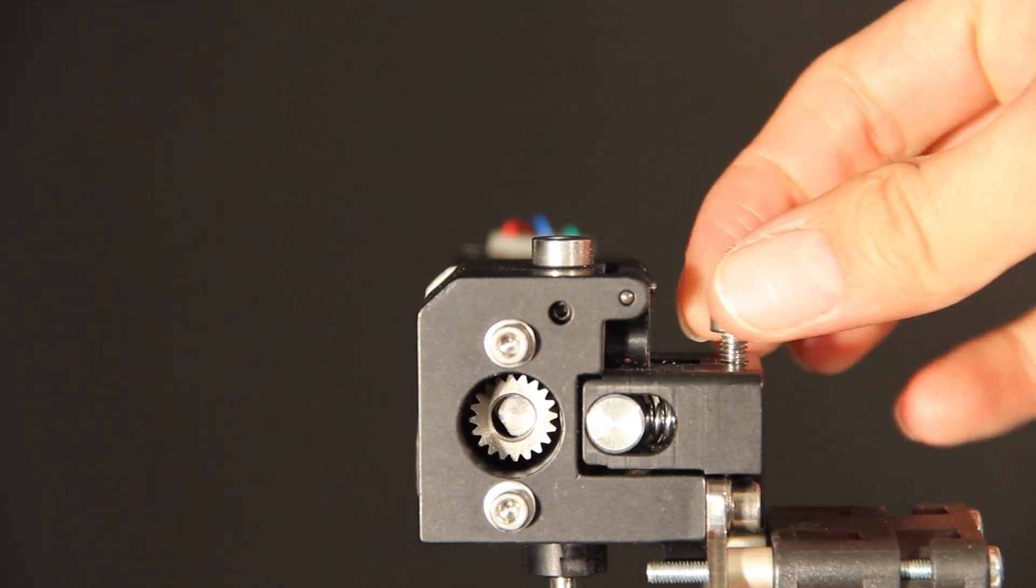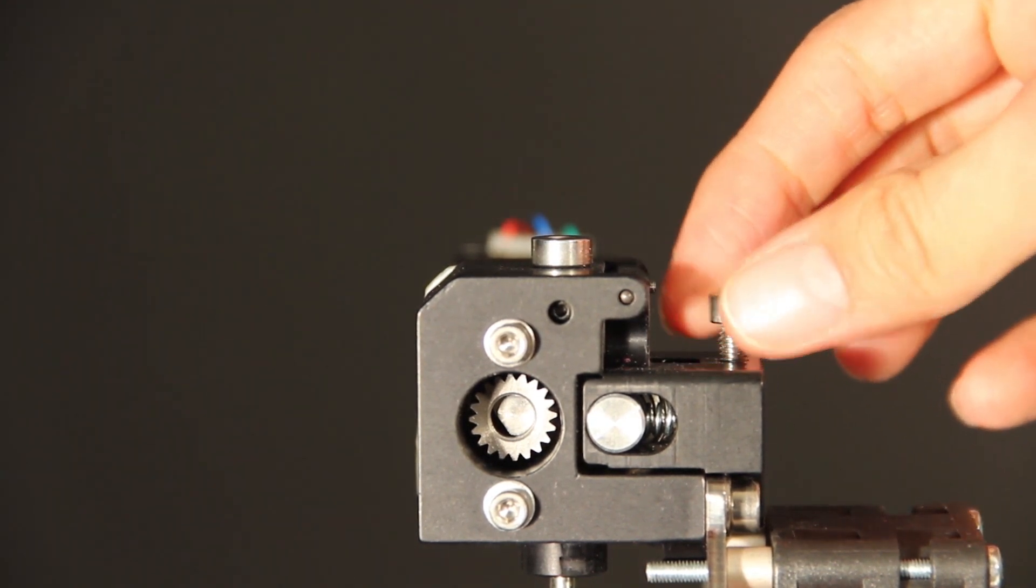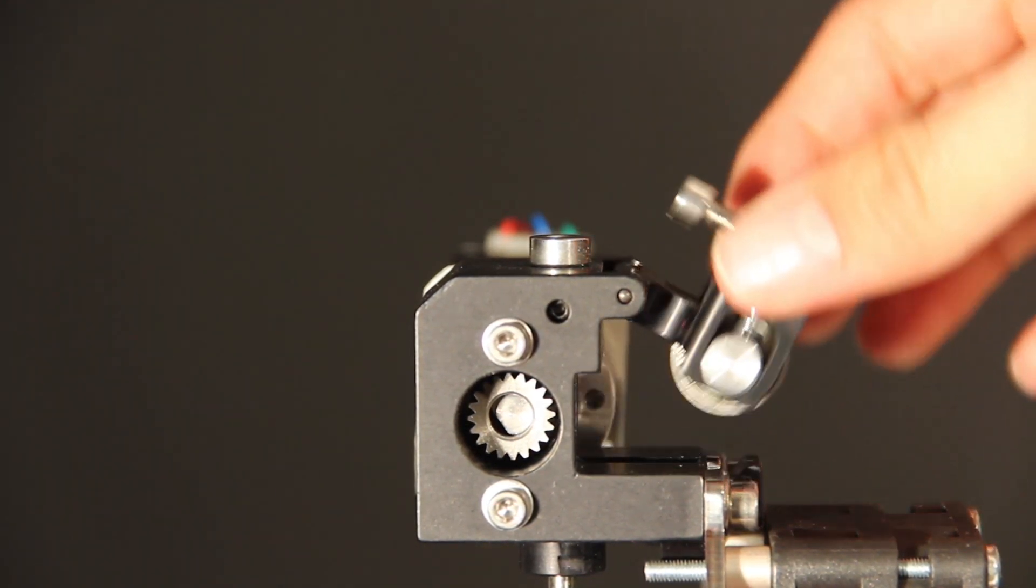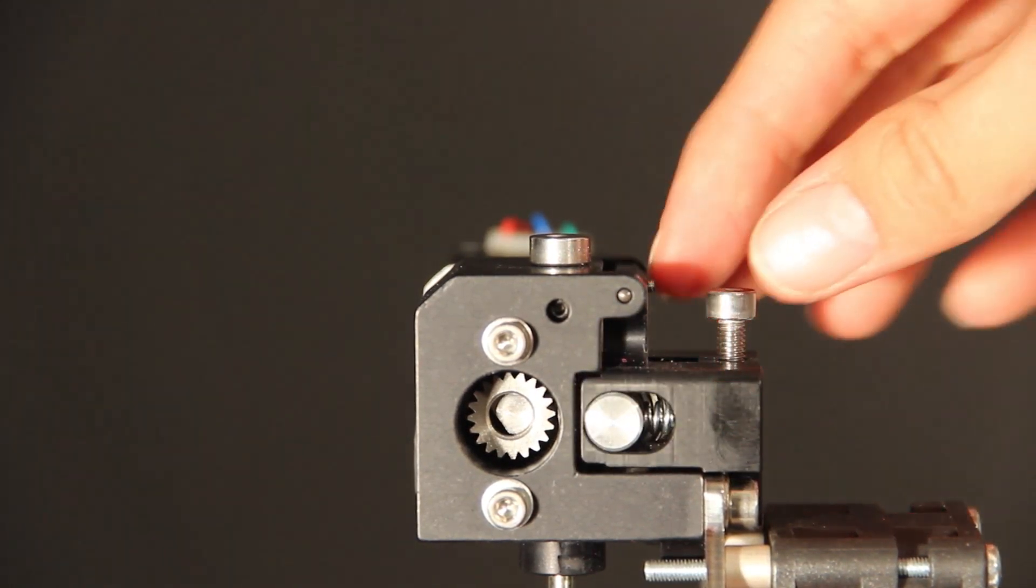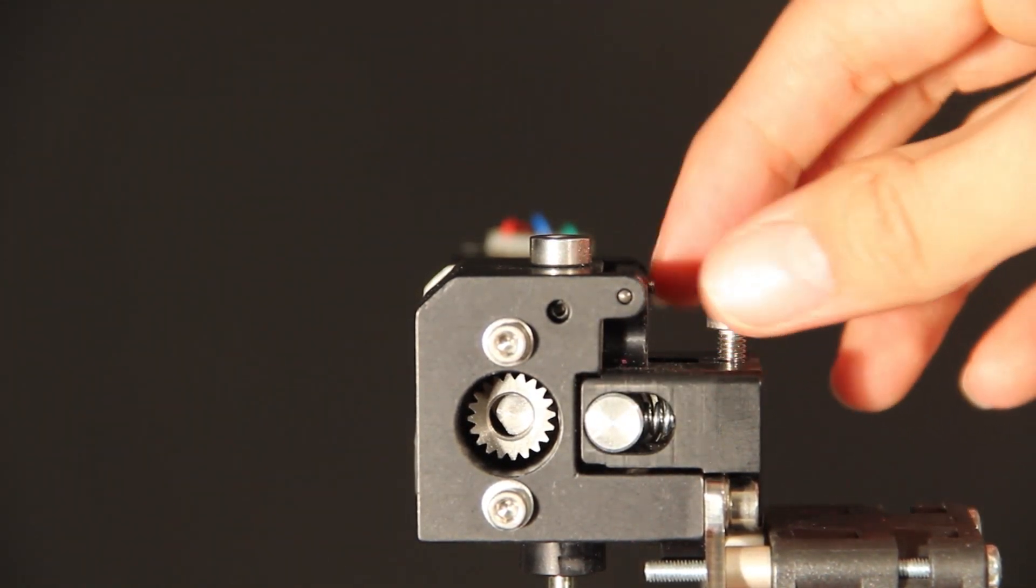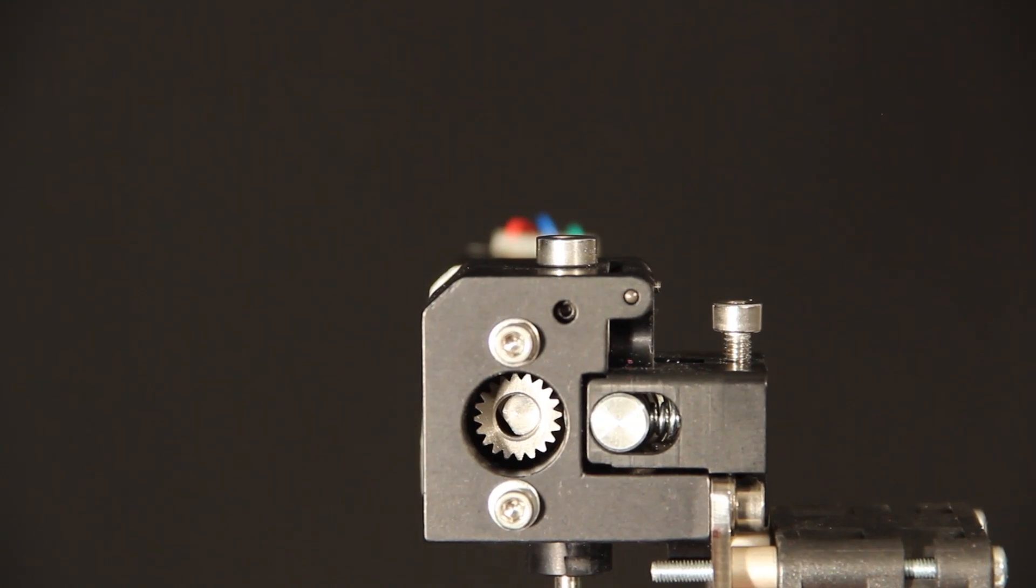Each component in the extruder is CNC machined to the highest precision standards. Stainless steel for the parts that require the most strain, brass for the nozzle, and anodized aluminum for the motor housing. It not only functions well, but also looks great.